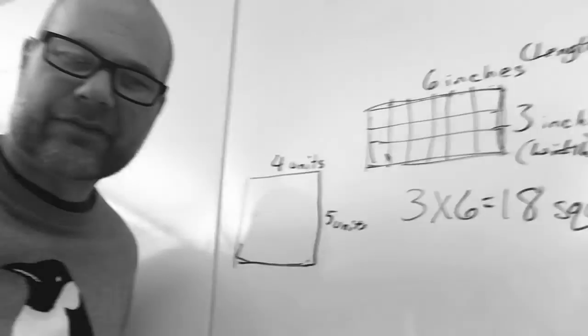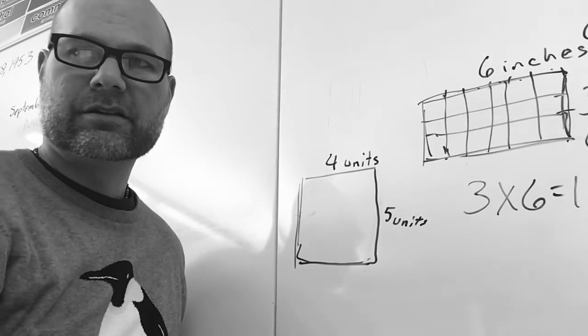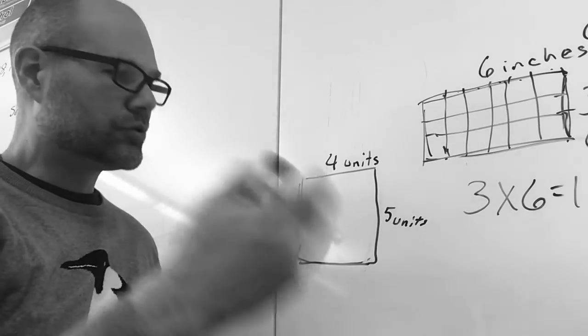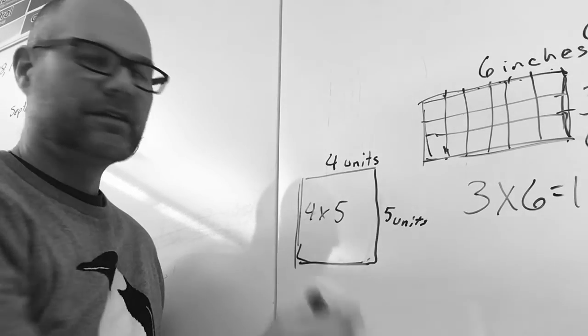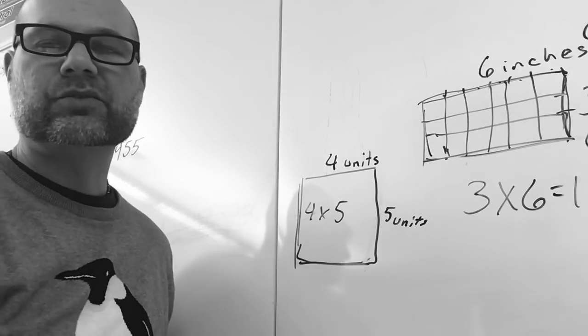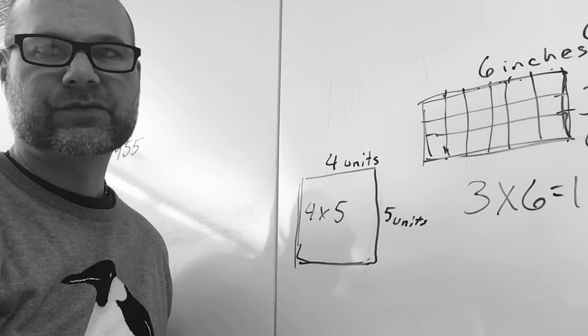Well, do you have to draw squares in order to know that there are squares in there? No, you don't have to. You could just do 4 times 5, and that's how many square units would fit in this rectangle. So, what's 4 times 5?